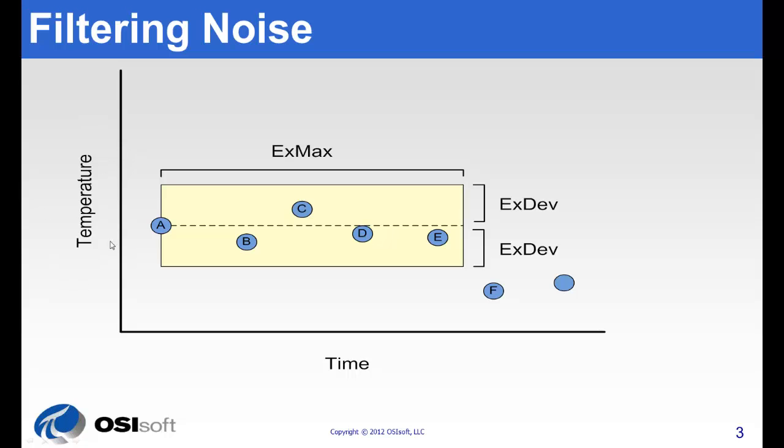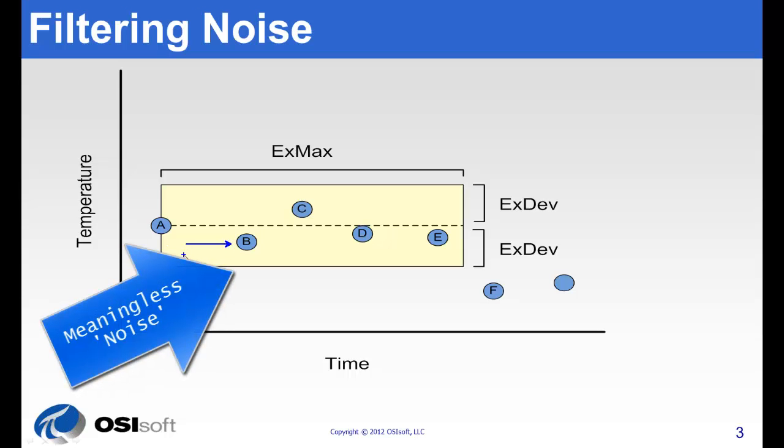So here I have a thermocouple measuring temperature, and it has a certain instrument precision. And successive values come in, however many of them are within the instrument precision. So we would call these values, we would say that they don't really have meaning. They're not significant and we shouldn't base decisions on them.